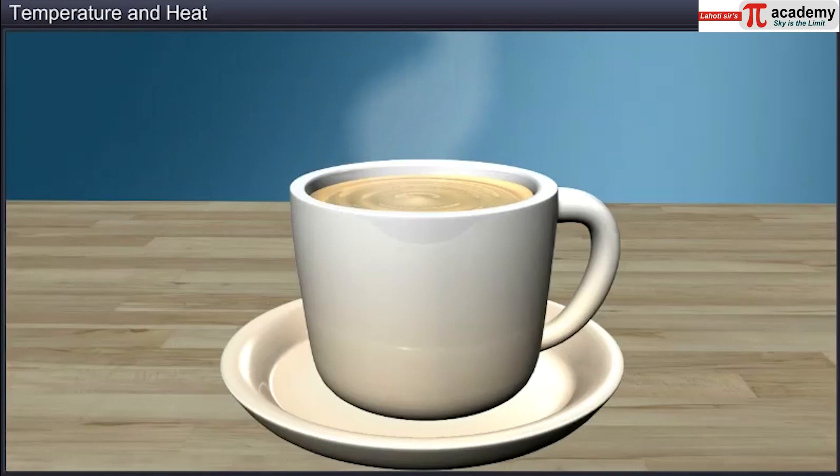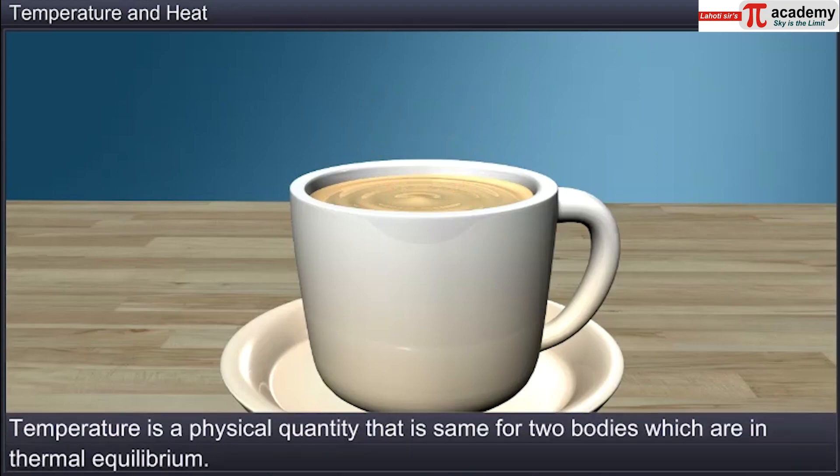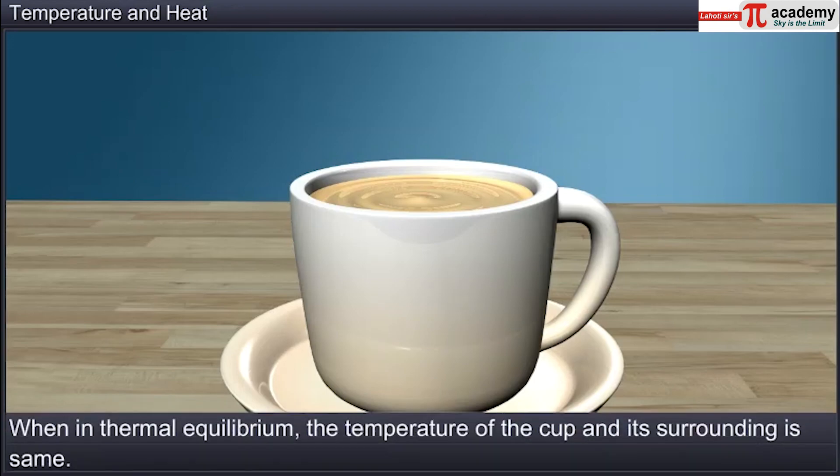For example, when a cup with hot tea is placed on a table, heat flows from the cup to surroundings until thermal equilibrium with the surroundings is attained. We define the temperature as a physical quantity that is same for two bodies which are in thermal equilibrium. That means, when the teacup is in thermal equilibrium with the surroundings, it is at the same temperature as that of its surroundings.